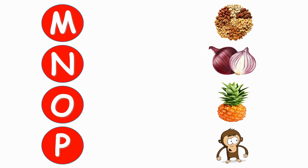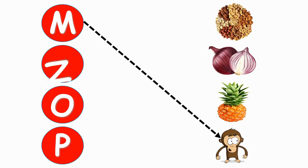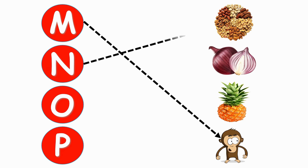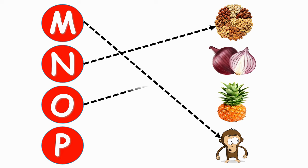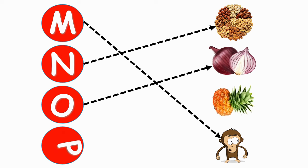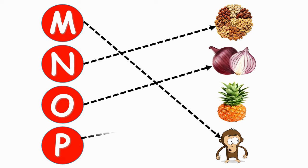M for Monty. N for Knots. O for Onion. B for Pineapple.